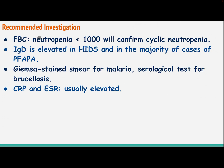Recommended investigations: Complete blood count — neutropenia less than 1,000 will confirm cyclic neutropenia. IgD is elevated in hyperimmunoglobulinemia D syndrome and in the majority of cases of periodic fever with aphthous stomatitis, pharyngitis, and cervical adenitis. Giemsa stain smear for malaria; serological test for brucellosis.